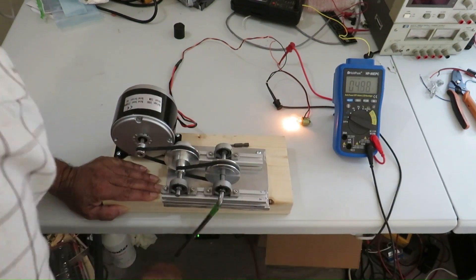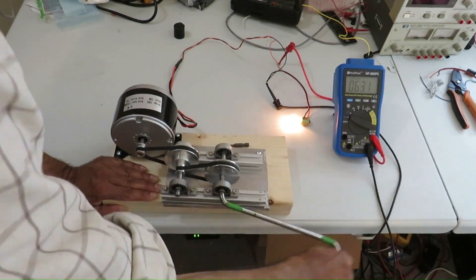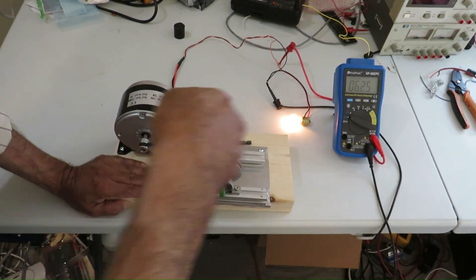You can see the lamp is glowing and the voltage across that is shown here in the meter.